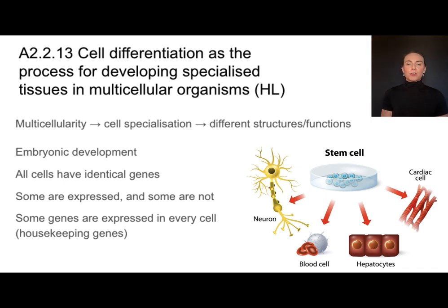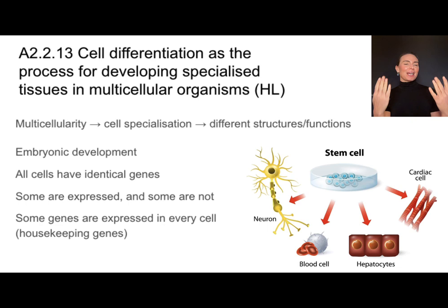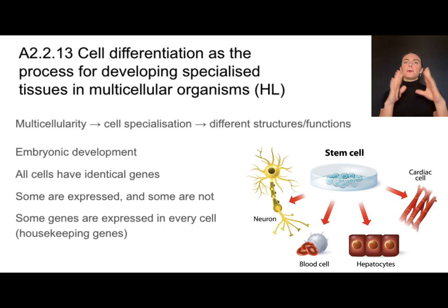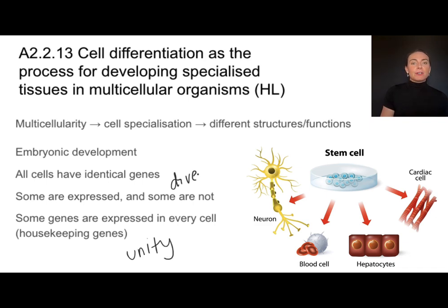For example, a neuron is going to turn on all of the genes that tell it how to do neuron things, and cardiac cells are not going to have those same genes turned on — they're going to express the genes that help them look like and function as cardiac cells. There are some genes that are expressed in every cell, like how to manufacture ribosomes or how to go through cell division — those are in common with every cell. So thinking about the theme of unity and diversity: unity in shared genes, diversity in terms of which genes are expressed and which aren't — and that's how we get different cell types in multicellular organisms.